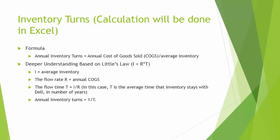First, let's take a look at inventory turns. Inventory turns is also called inventory turnover or inventory turnover ratio. From operations management, there is a pretty famous formula to calculate inventory turns: annual inventory turns is equal to annual cost of goods sold divided by average inventory. If we want monthly inventory turn, then it's going to be equal to monthly cost of goods sold divided by average inventory.